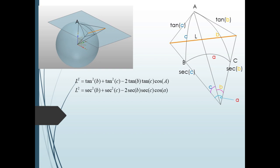We'll also create a line segment joining the projection of vertices B and C on the tangent plane, shown here in orange. We now want to compute the square of the length of this new segment using two different triangles and the planar law of cosines. From the triangle on the tangent plane with sides tan b and tan c and included angle capital A, we get l² = tan²b + tan²c − 2 tan b tan c cos A. Similarly, using the triangle with sides sec b and sec c and included angle small a, we get l² = sec²b + sec²c − 2 sec b sec c cos a.